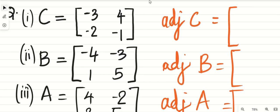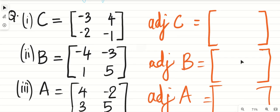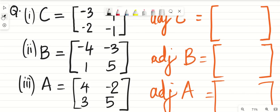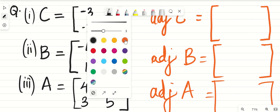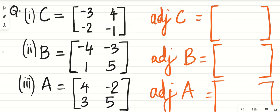Let's try to solve a few questions. You will not get these kind of questions for your exam because this is too simple, but this will be useful when you do a very long question. So what should we do here? They will interchange, so minus one and minus three will come, and these two elements will change their sign - so positive two will come here, negative four will come. This is the adjoint of C.